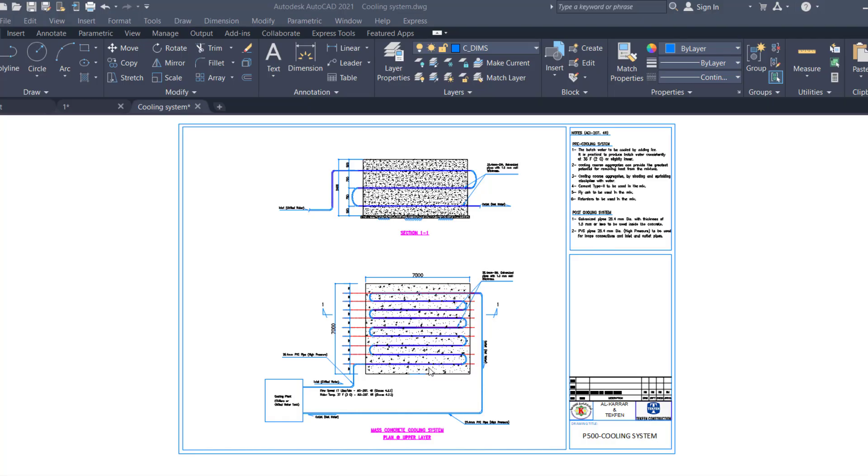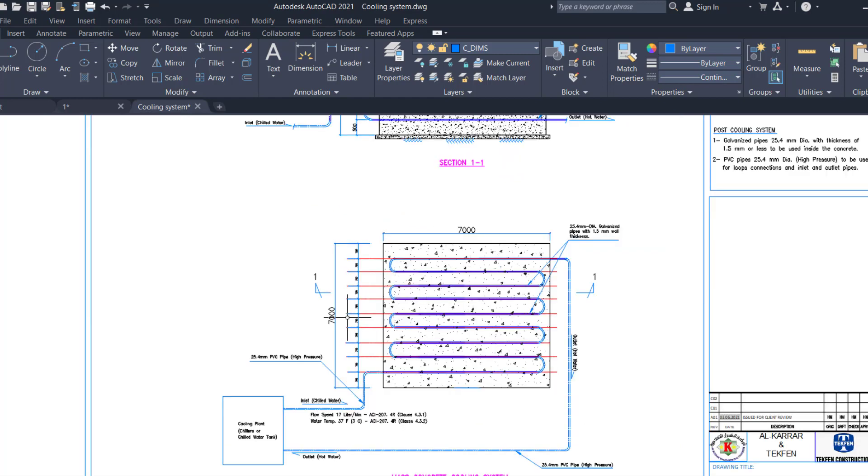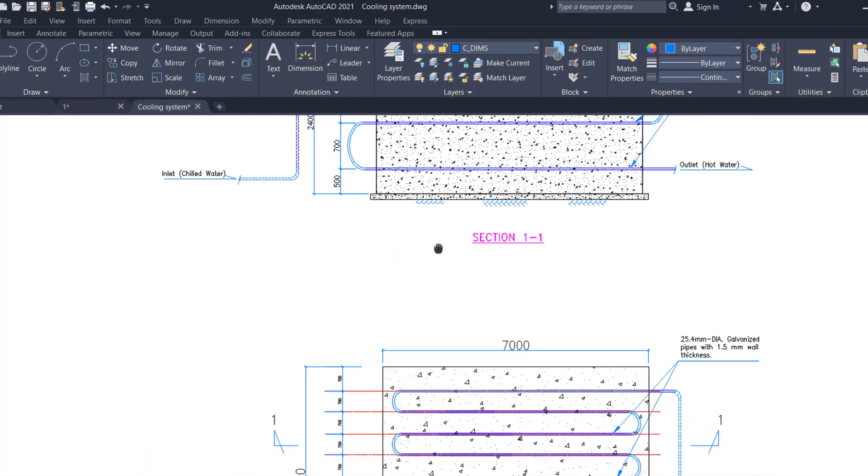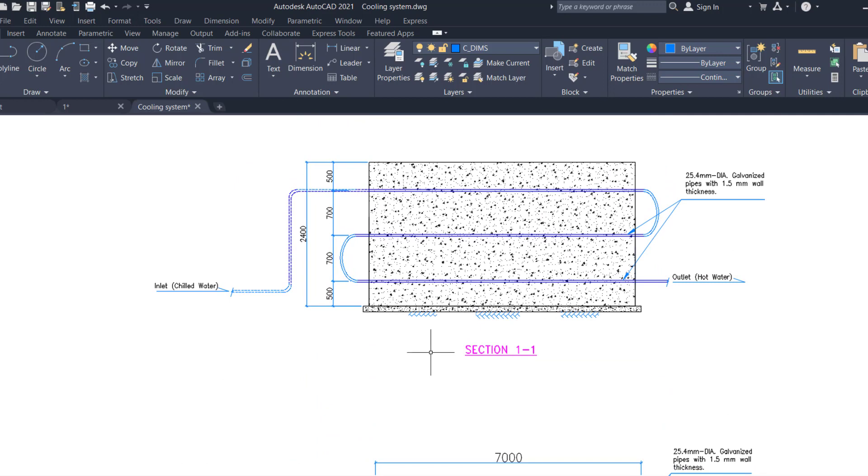This drawing shows a cooling system done for mass concrete block with dimensions of 7 by 7 meters in plan and 2.4 meters in height. As shown, cooling pipes had been laid in three layers. First layer laid at height of 500 mm from bottom of concrete to ensure cooling of bottom layer which is highly restrained from expansion by contact with blinding.